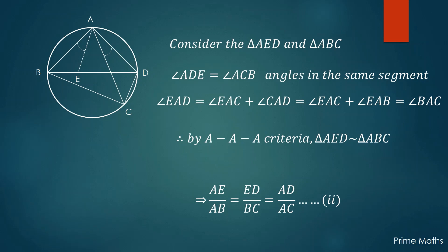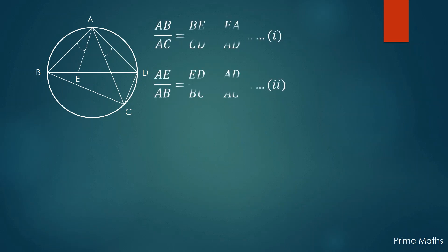So we have obtained two equations. It is easy to see that from equation 1, using the first two ratios, AC times BE is equal to AB times CD.